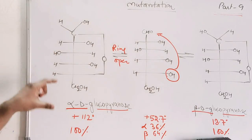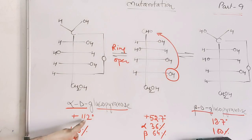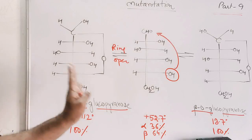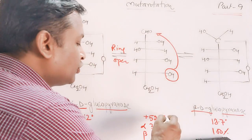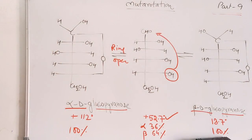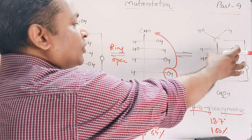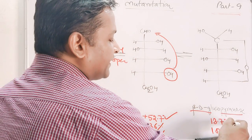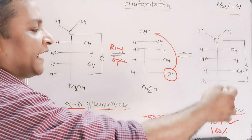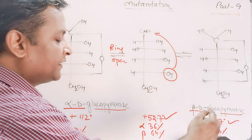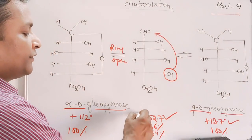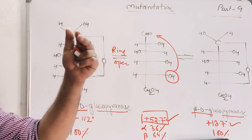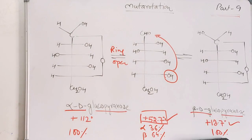When you take an alpha solution and dissolve it in water, the initial rotation is +112°. If you keep the solution undisturbed, it attains a constant value of +52.7°. If you take beta-D-glucose solution, the initial specific rotation is +18.7°, and after some time it increases and reaches the constant value of +52.7°. This decrease from alpha and increase from beta to a constant value is called mutarotation.